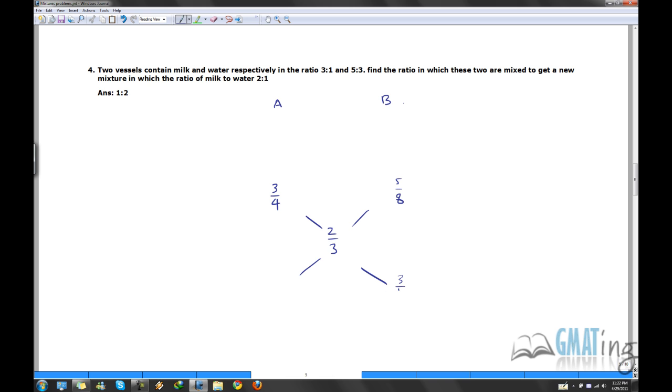So 2 by 3 minus 3 by 4. So 3 by 4 minus 2 by 3 would be 12, 9, 8, 1 by 12. And this would be 2 by 3 minus 5 by 8. This would be 24, 16 minus 15, 1 by 24. Ratio would be 1 by 24 is to 1 by 12. Will be 12 is to 24. Will be 1 is to 2. So the ratio will be 1 is to 2.